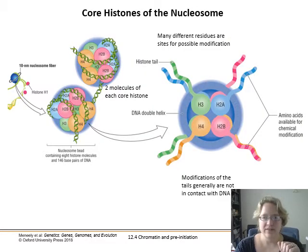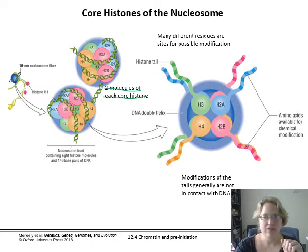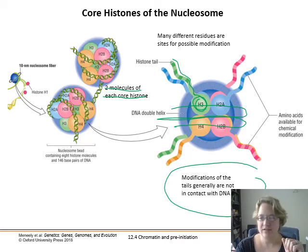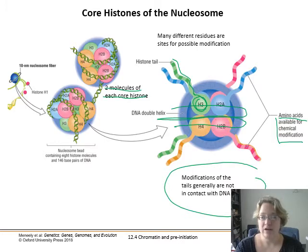Looking more closely at the histones within the nucleosome: there are two molecules of each particular histone, and they're paired up. The histones have a core region and a tail waving off, and the DNA wraps around these structures. The tails are generally not in direct contact with the DNA, but they are chains of amino acids available for chemical modification. What gets attached to these tails influences whether or not the DNA near those tails can be transcribed.